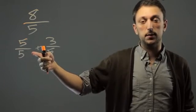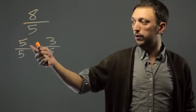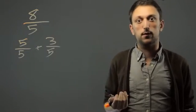You're allowed to do that as long as the denominator stays the same. So, 5 plus 3 is 8 over 5.